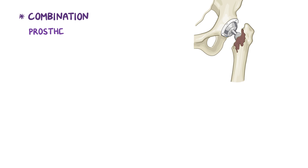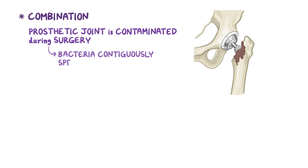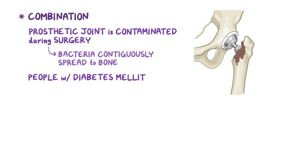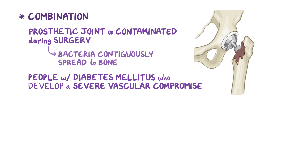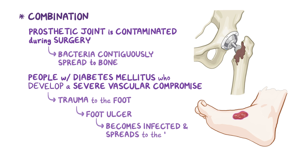There can also be combinations of these. For example, when a prosthetic joint becomes contaminated with bacteria during surgery, and then that bacteria contiguously spreads to nearby bone. Another example is when people with diabetes mellitus develop a severe vascular compromise — a small trauma to the foot can lead to the formation of a foot ulcer, which then becomes infected and spreads to the nearby bone.